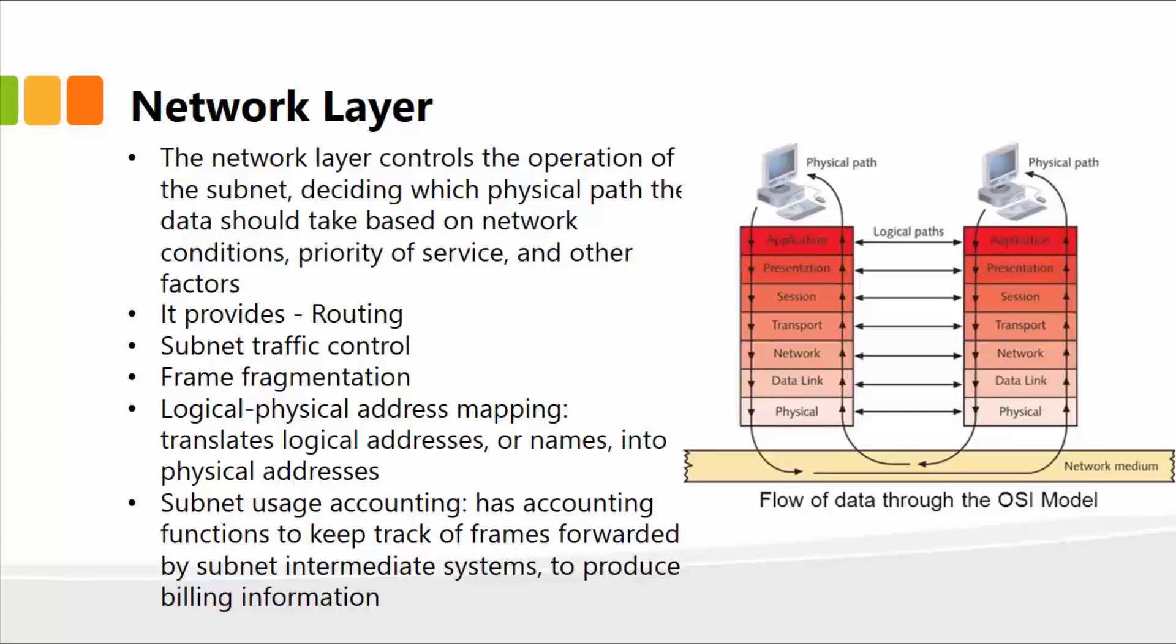It takes a look at and sees which department should I send this data to, whether it belongs to the sales department, the purchase department, operations, marketing, and so on. So it looks at the subnet, the IP header, and the address where it needs to go. The subnet usage accounting has functions to keep track of frames forwarded by subnet intermediate systems to produce billing information.